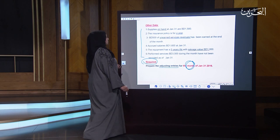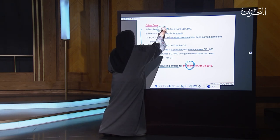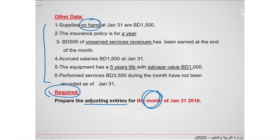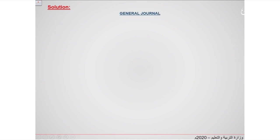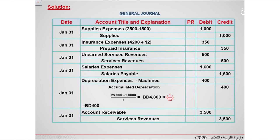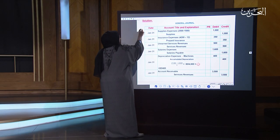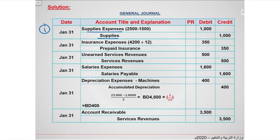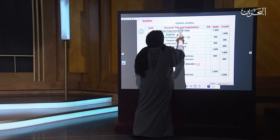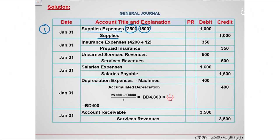The first transaction: supplies on hand — covered in the previous lesson. In the general journal, put supplies expense and supplies. The balance shows $2,500 and the transaction shows $1,500 on hand. So I subtract: $2,500 minus $1,500 equals $1,000 on the debit side and $1,000 on the credit side.